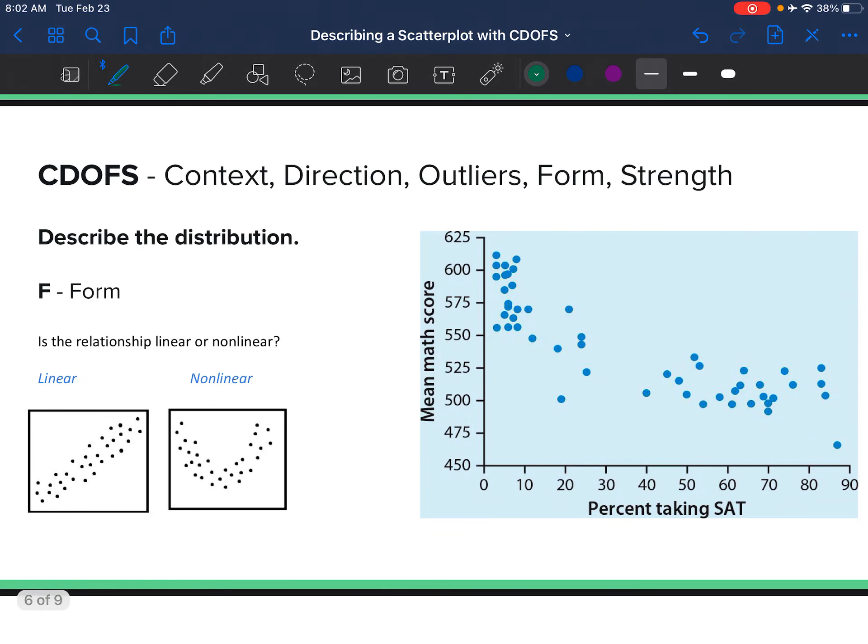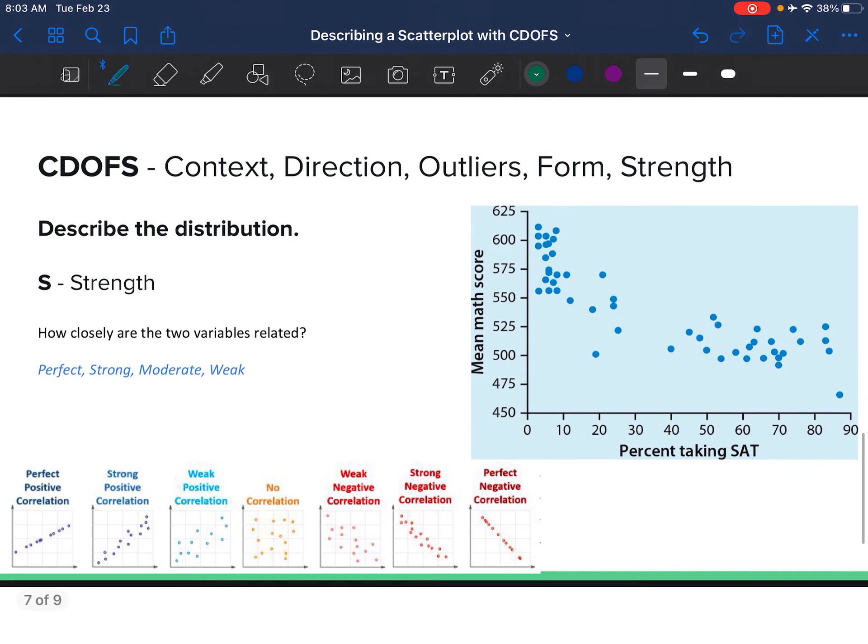Form is just describing the look of the relationship. Is it linear, which means the points increase or decrease as a line? Or is it non-linear, so it's something like an exponential or parabola—there's a curve there? If I draw this, even though they're kind of far away from the line, I can see there's a pretty linear relationship here.